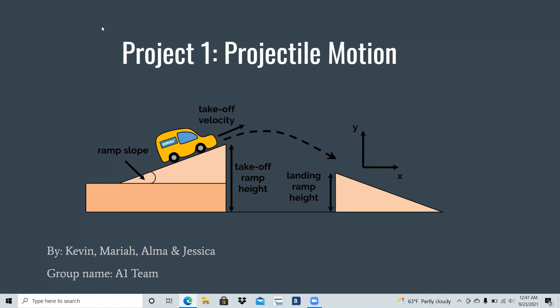We were told to create a projectile motion scenario to our liking and our scenario is similar to the picture that we have right here. We decided to create a car launching off of a ramp and landing onto another ramp.